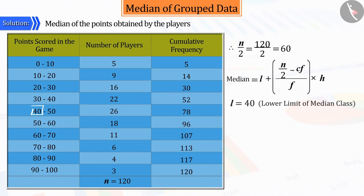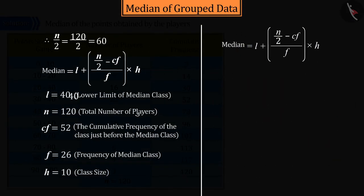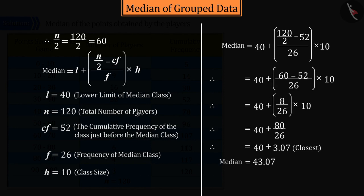Where L is the lower limit of the median class, i.e., 40, and n by 2 equals 60. Cf is the cumulative frequency of the class immediately preceding the median class, i.e., 52. F means the frequency of the median class, i.e., 26, and H is the measurement of the class, i.e., 10. Substituting these in the formula and solving it gives 43.07.